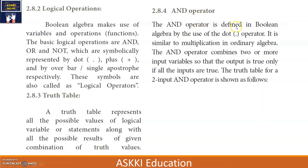Coming to the AND operator — the AND operator is defined in Boolean Algebra by the use of the dot operator, very similar to multiplication in ordinary algebra. The AND operator combines two or more input variables and gives the output as true only if all the inputs are true. If any input is false, the output is false.